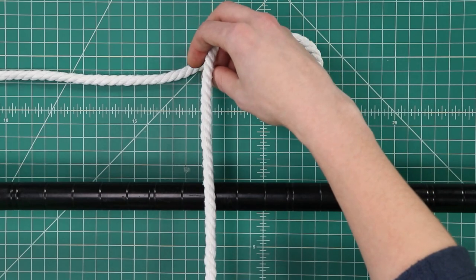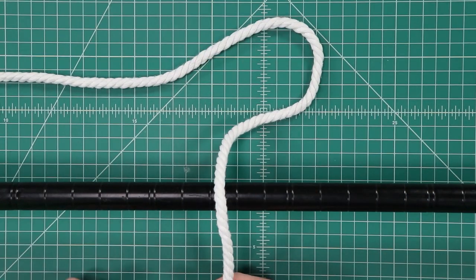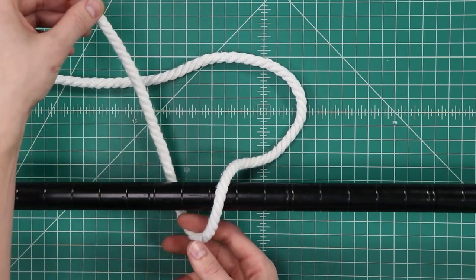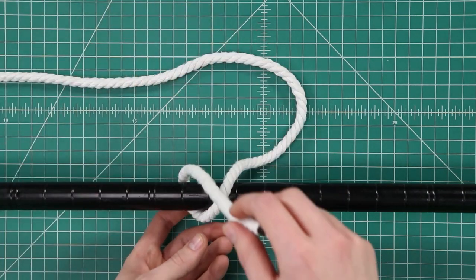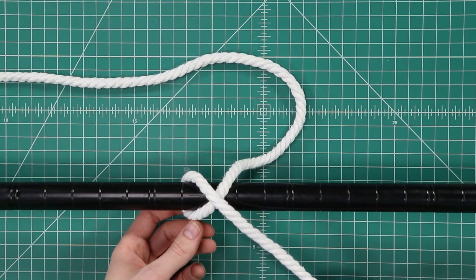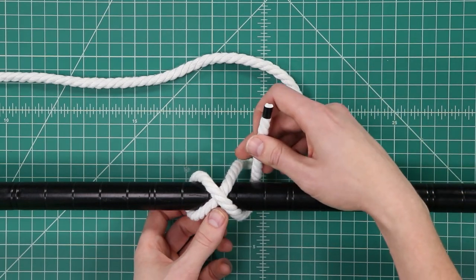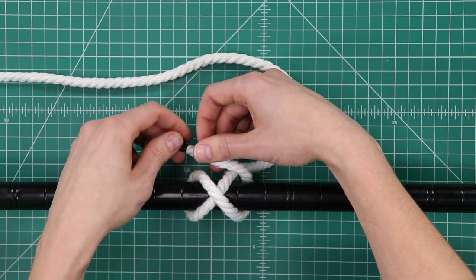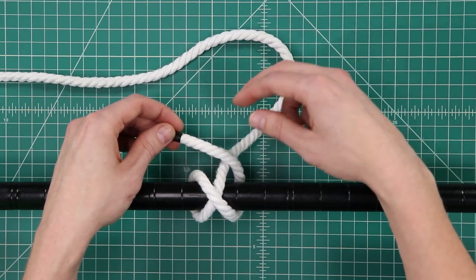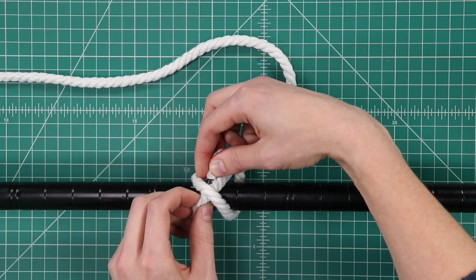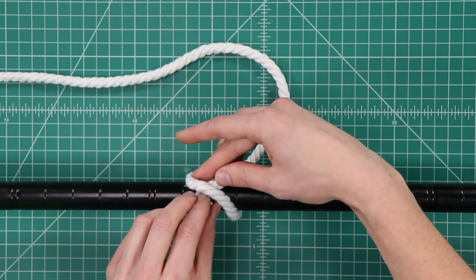So begin by passing the rope over the object, and then we'll bring it around to the left side, and we'll cross it over the top again in an X, bring it around to the right side, then we're going to go over our standing end, this is our standing end here, before going underneath both cords down towards the bottom.